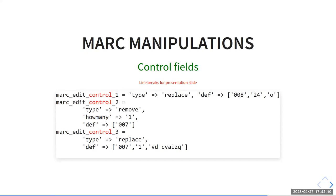Here are examples of dealing with control fields. Control fields are a bit different since they don't have subfields. You use mark_edit_control with an incrementing number — because if two configs have the exact same key, only the last one is taken. Type 'replace': this is an example where we're replacing the 008 at position 24 and putting an O in that spot. That makes the bib electronic — O, S, or E are the values — and then Evergreen reads that and puts the electronic book icon.